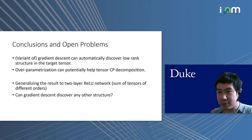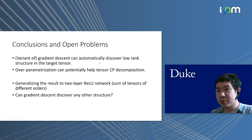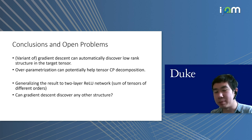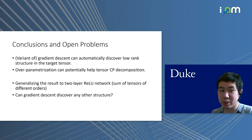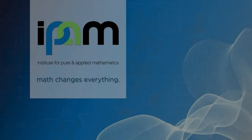What we are able to prove in this work is that a variant of gradient descent can automatically discover low-rank structure in the target tensor. If T-star is of low rank, we don't need too many components to represent it. We show that overparameterization can potentially help tensor CP decomposition. Open problems include: how to generalize this result to a layer ReLU network, which is a sum of tensors of different orders; and whether gradient descent can discover any other structure beyond low-rank. Thanks.